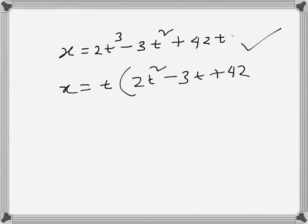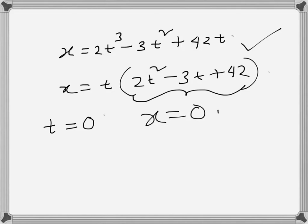We can see that initially, when t is equal to 0, x is equal to 0, so the particle is initially at origin. But for it to be at origin again later, this bracketed part has to be 0 as well — there has to be a t for which this expression is 0.